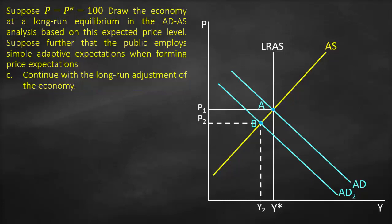Now the third part of the question: continue with the long-run adjustment of the economy. In the long run, we know that P2 is lower than P1, so we have a lower price, and Y2 is lower than Y1 or Y*, which is our potential output or full employment output. Consequently we will have lower output, therefore it will result in higher unemployment. Because of higher unemployment, nominal wages will decrease, giving producers a motive to increase their production. Consequently, aggregate supply will shift to the right.